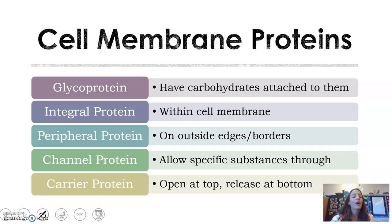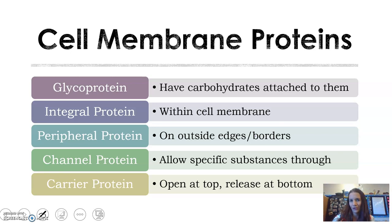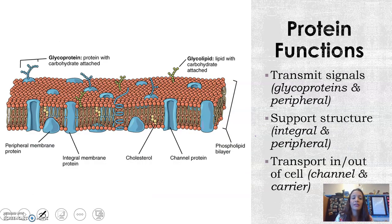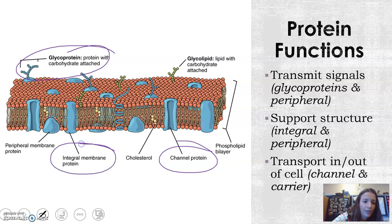First, the proteins. There are five different proteins in the cell membrane you need to be aware of. A glycoprotein has carbohydrates attached to it, kind of like an antenna out the top. The integral protein goes through the entire cell membrane from top to bottom. The peripheral protein is on the outside edges or borders — think about peripheral vision being the edges. A channel protein allows substances through, like a channel on a lake or the Panama Canal. A carrier protein opens at the top to take something in, closes, and opens at the bottom — kind of like a Pac-Man.